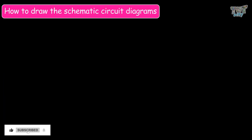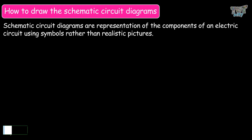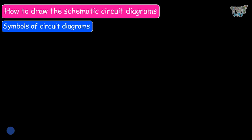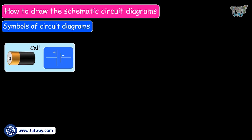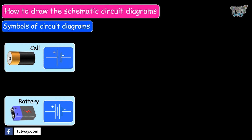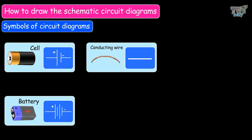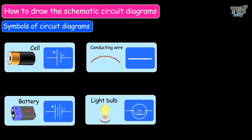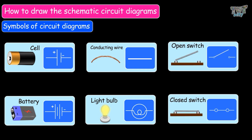Now we will learn how to draw the schematic circuit diagram. Schematic circuit diagrams are a representation of the components of an electric circuit using symbols rather than realistic pictures. We should first know the symbols: this is the symbol of a cell with one positive end and one negative end; this is the symbol of a battery, which is a group of two or more cells; this is the symbol of a connecting wire; here is the symbol of a light bulb; here is the symbol of an open switch; and this is the symbol of a closed switch.